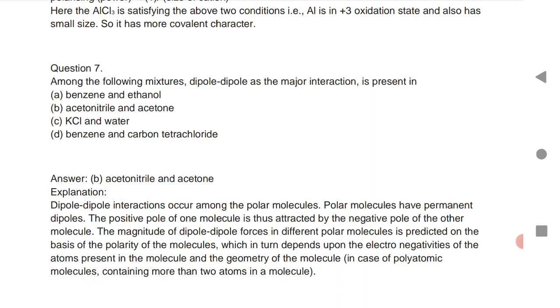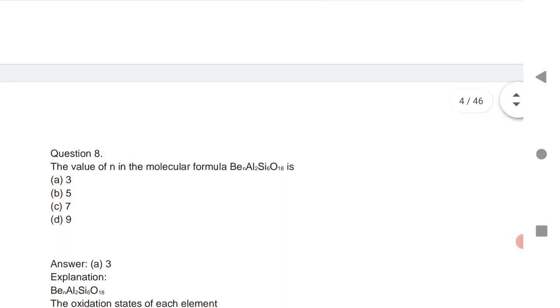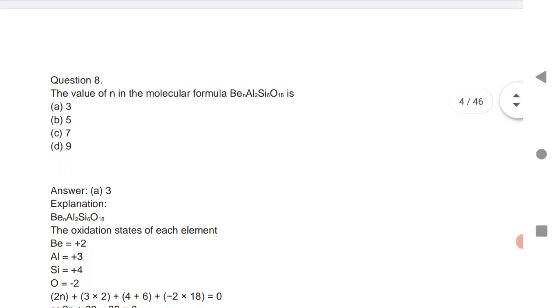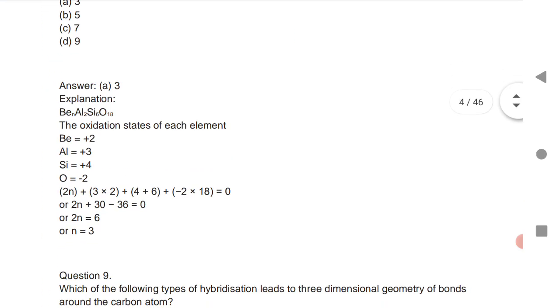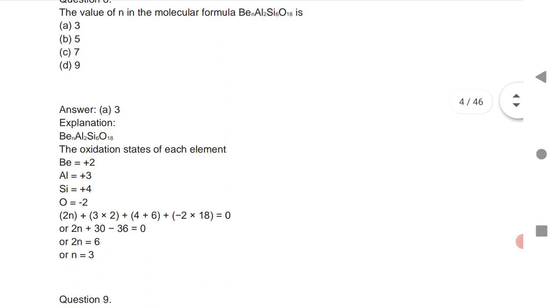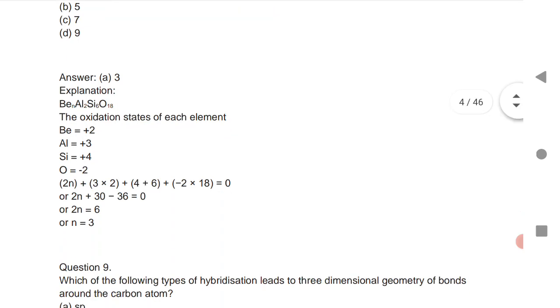The value of n in molecular formula Be(n)Al2Si6O18 is 3. Beryllium oxidation state is +2, aluminum +3, silicon is +4, oxygen is -2. If you substitute, you will get the value. You know how to calculate oxidation state - substitute and you will get the answer.